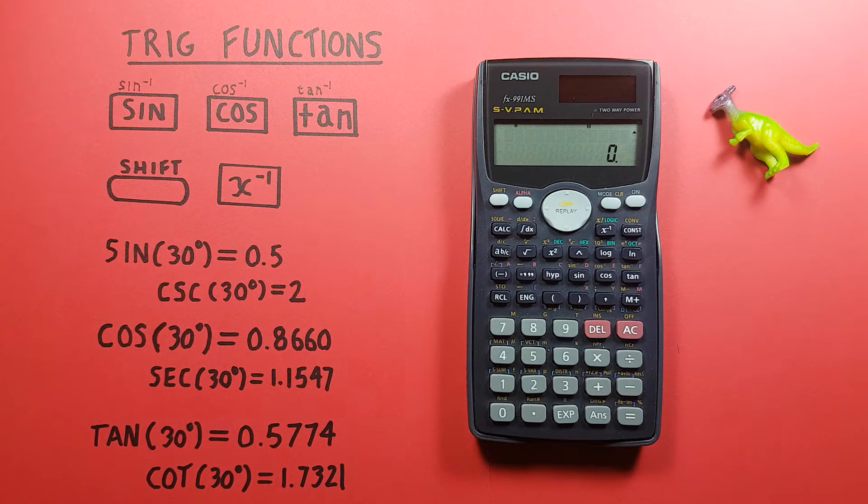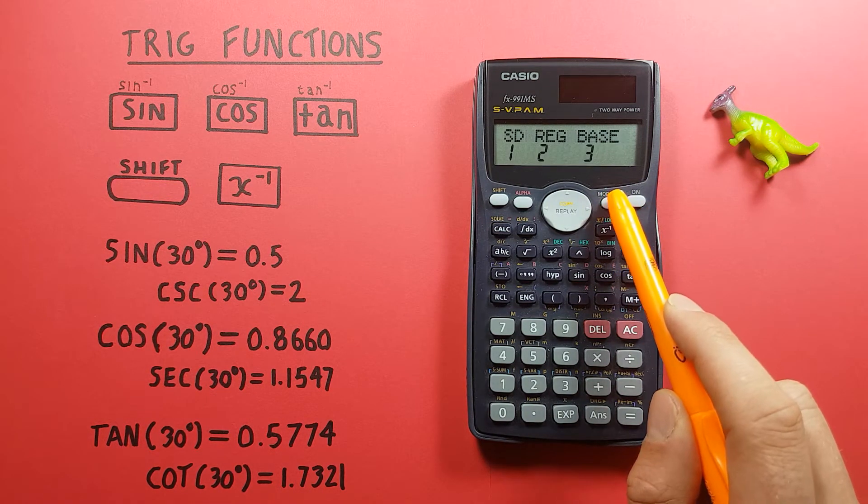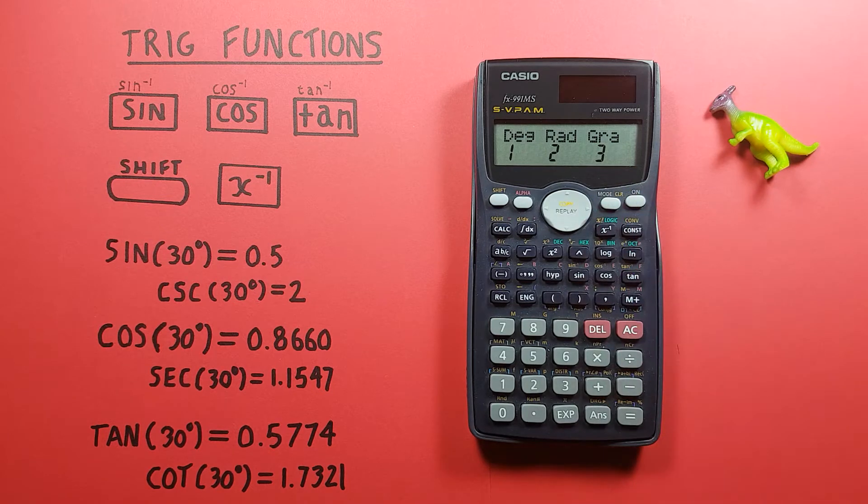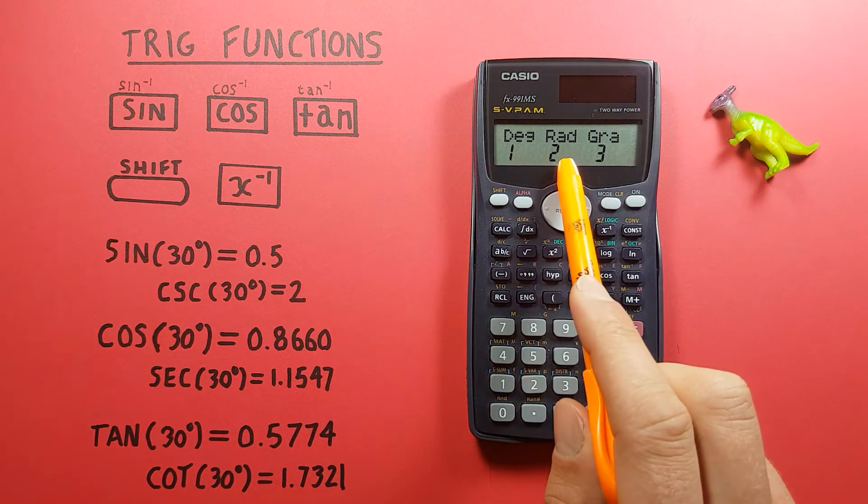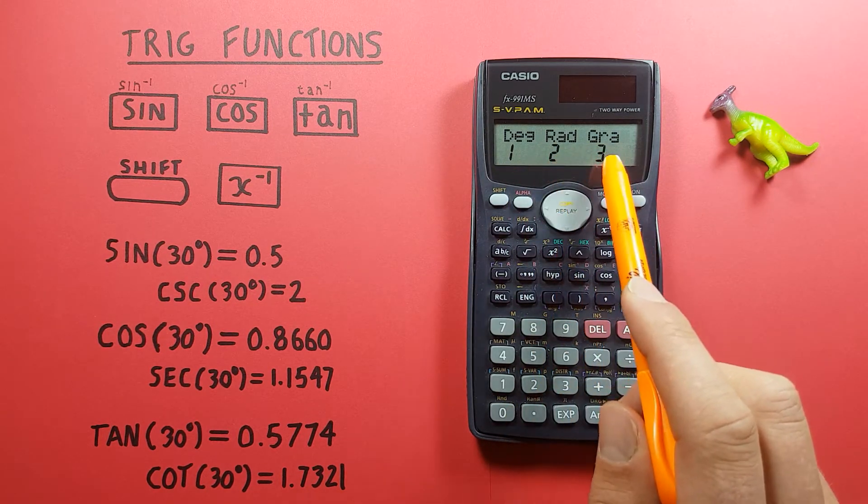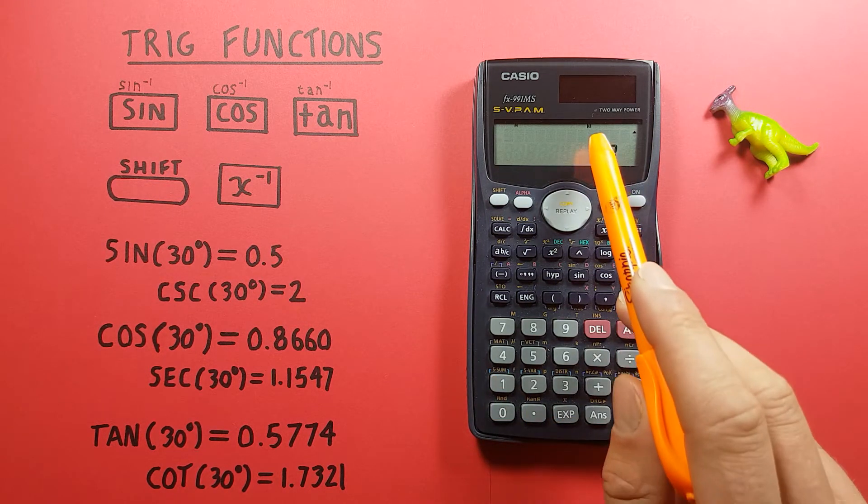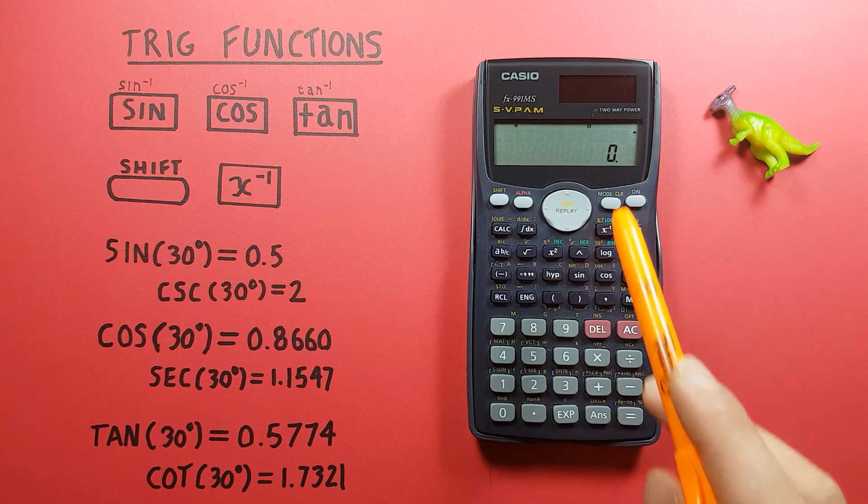If we don't see that, we can change our calculator to degrees mode by pressing the mode key 1, 2, 3, 4 times until we see this screen DEG RAD and GRA which stands for degrees, radians and gradients. We want to be in degrees so we select 1 and now we should have that D on the top screen there.